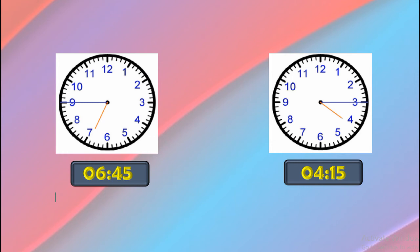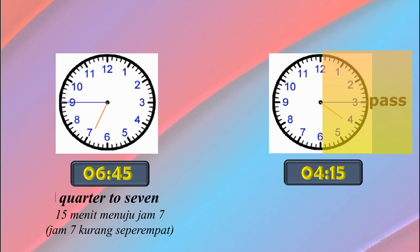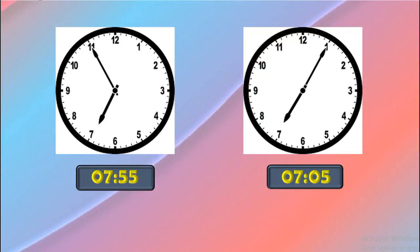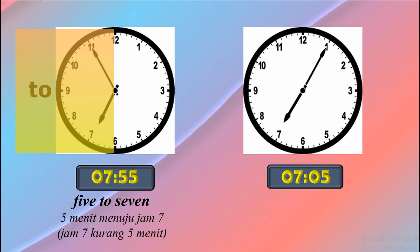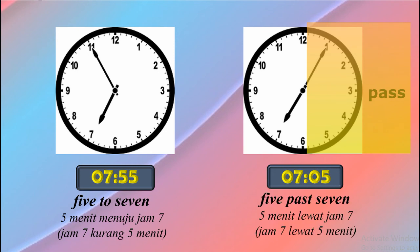Jam 7 kurang 15 menit — karena menitnya berada di area 'to', maka dibaca 'quarter to seven', artinya 15 menit menuju jam 7. Jam 4 lewat 15 menit — karena menitnya berada di area 'past', maka dibaca 'quarter past four', artinya 15 menit lewat jam 4. Jam 7 kurang 5 menit dibaca 'five to seven', artinya 5 menit menuju jam 7. Jam 7 lewat 5 menit dibaca 'five past seven', artinya 5 menit lewat jam 7.